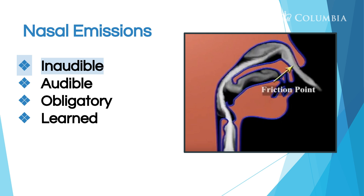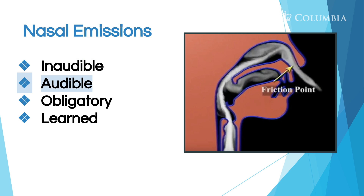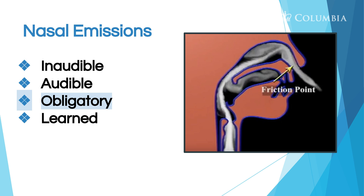Nasal emissions may be inaudible — you won't be able to hear them — but when you put a dental mirror under their nose, you'll be able to see the mirror fog up, letting you know that air is coming out of their nose. They may also be audible, so when the child says a word with a high-pressure sound like 'sun,' you actually hear it. Nasal emissions can be obligatory, caused by a structural or physiological reason, such as a fistula in the child's mouth directing air out through the nose.